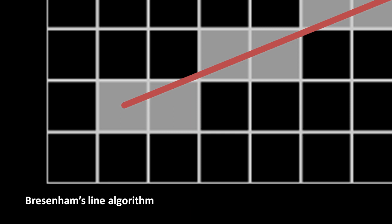Like with our naive line algorithm, in Bresenham's, we treat line drawing as two separate cases. In the first case, when our slope is between 1 and negative 1, we draw each pixel such that x increases by 1, while y increases by the slope. In the second case, when our slope is greater than 1 or less than negative 1, we do the reverse, drawing each pixel such that y increases by 1, while x is incremented by the inverse of the slope.